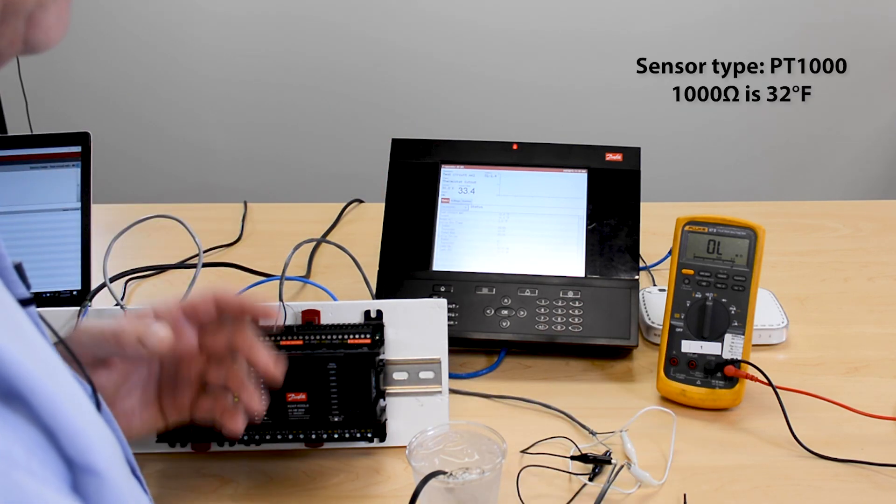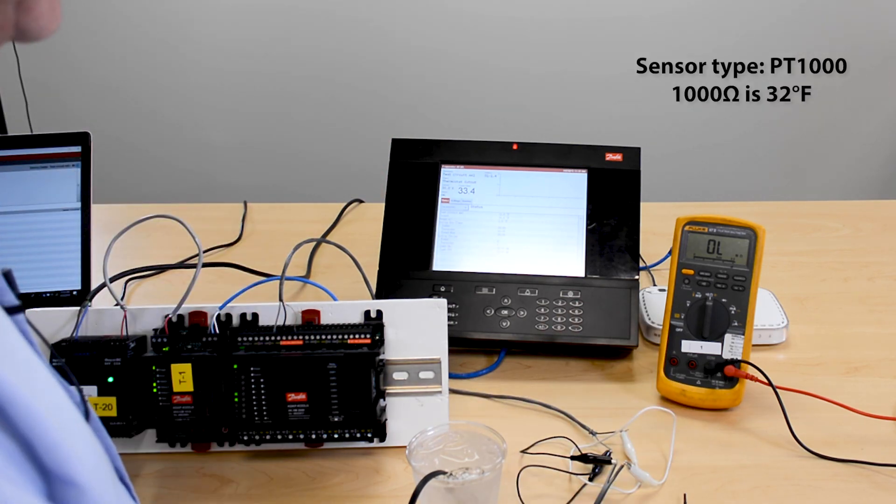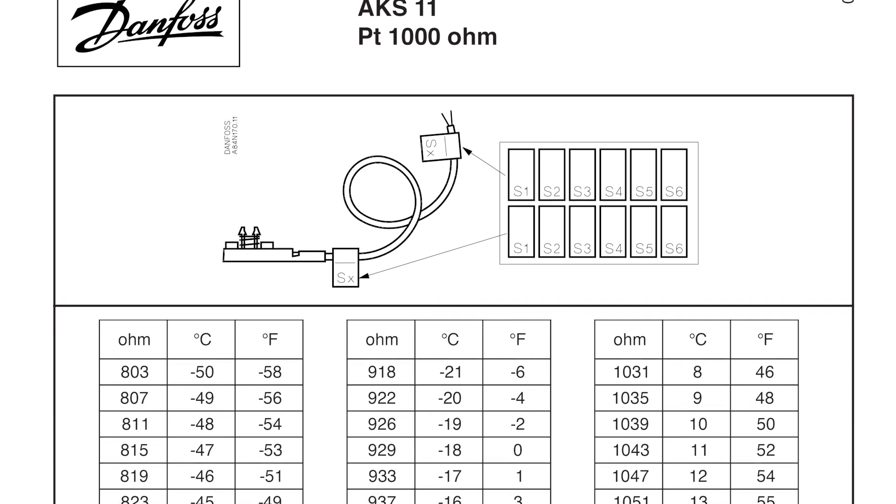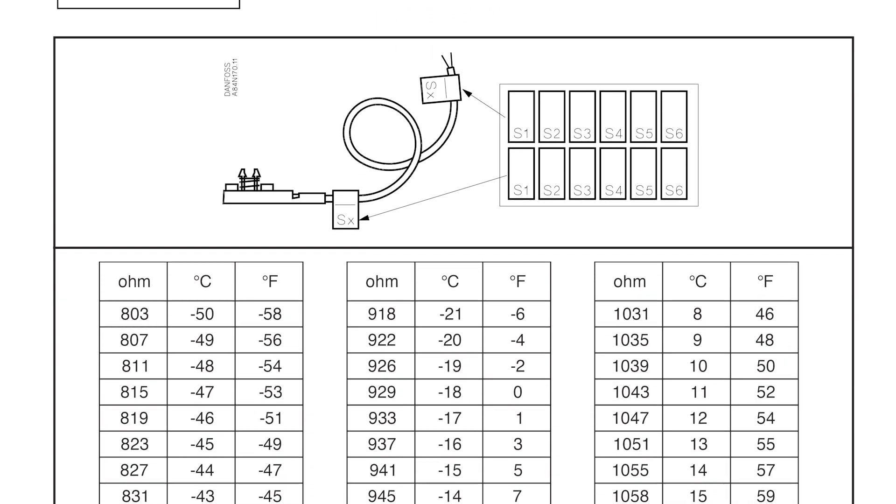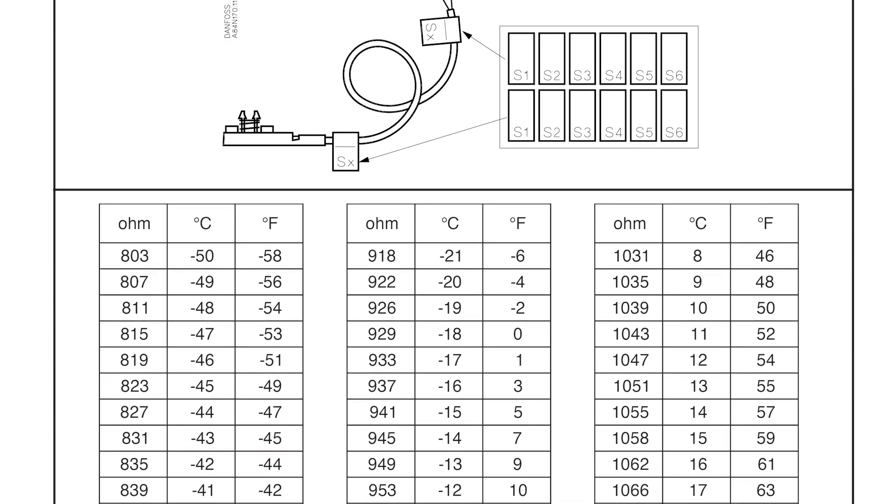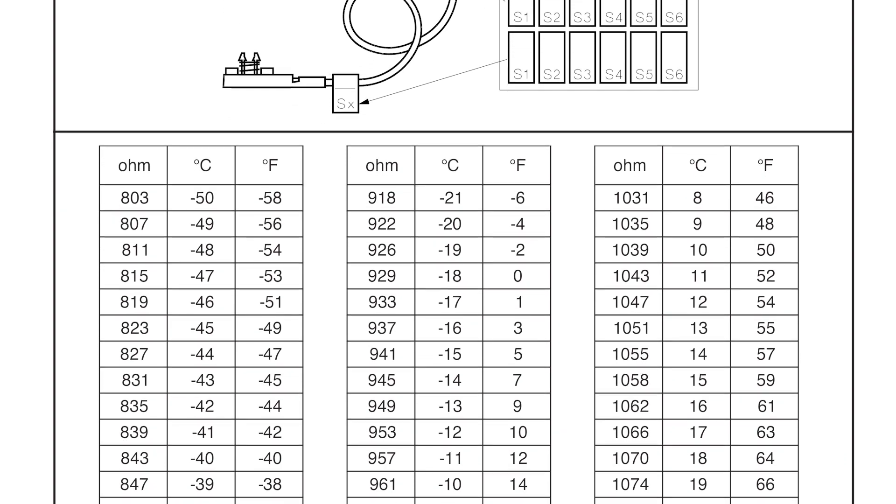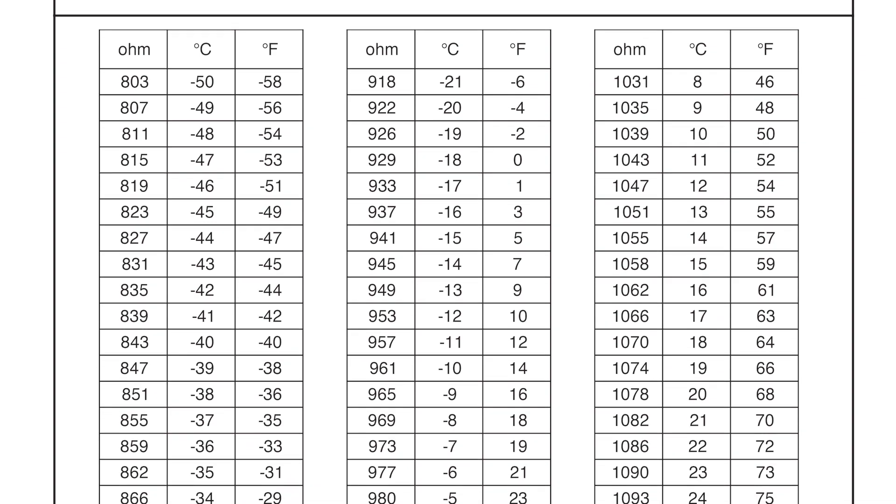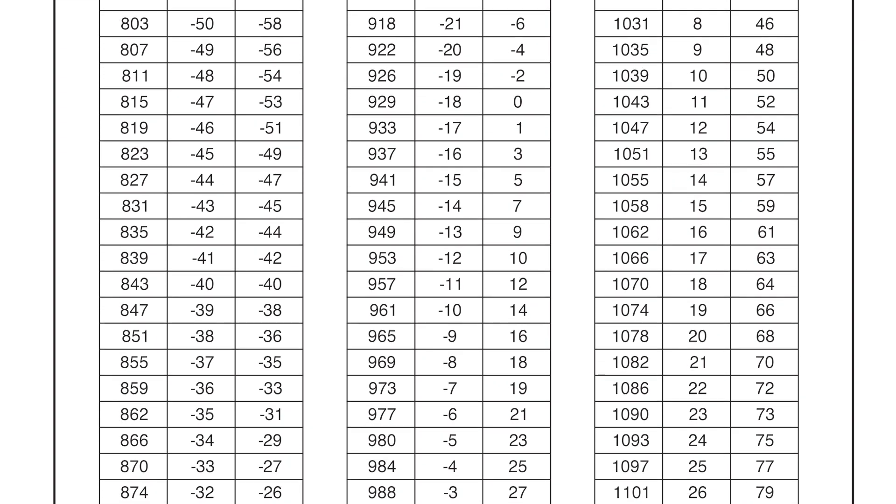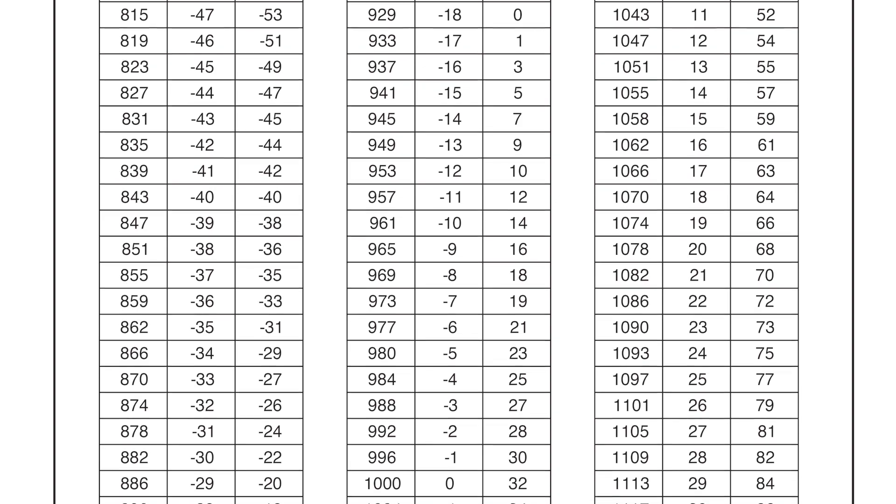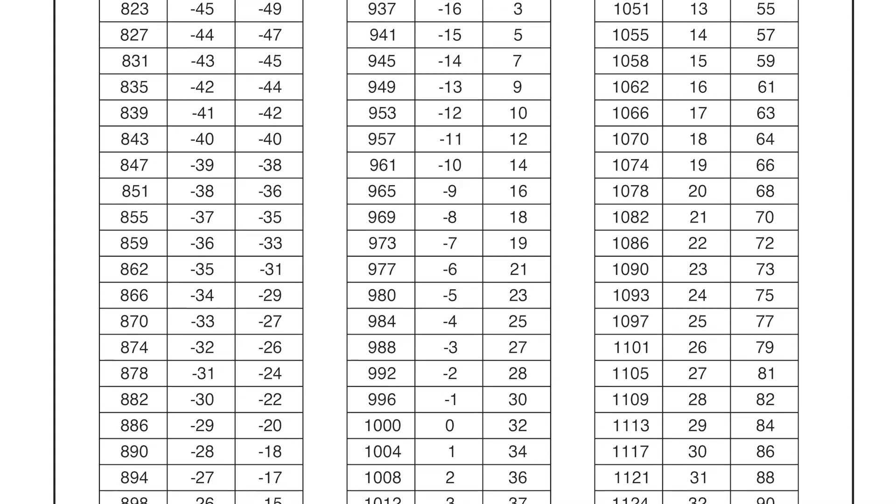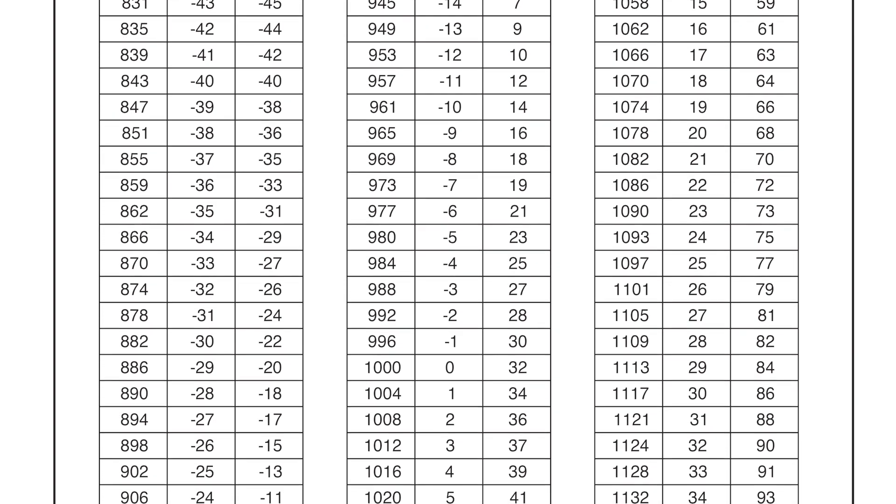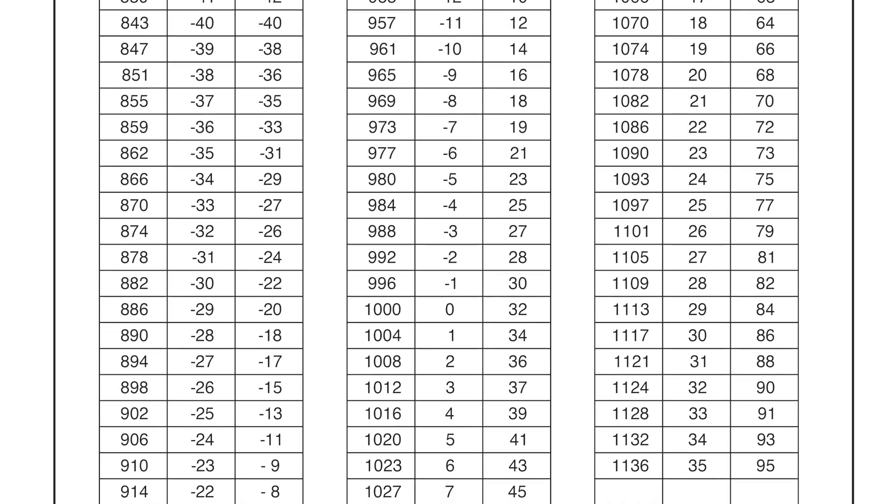As a package we can very easily troubleshoot to find out the status of our sensor. As you can see on the chart, we work in a range from minus 58, which is 800 ohms, up to 95 degrees, which is 1136 ohms. The sensor is a PT 1000, so 1000 ohms equals 32 degrees. If you wanted to reference a low temp application of close to minus 10, you would be about 910 ohms.